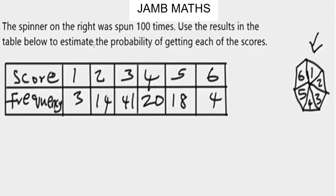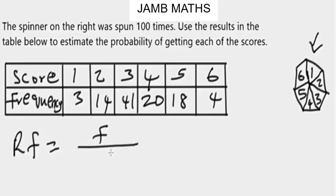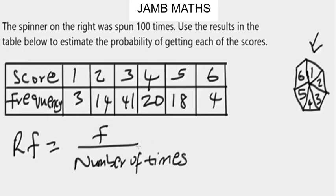You need to do an experiment over and over again and count how many times each outcome happens. That count is the frequency. You can then calculate the relative frequency using this formula: relative frequency equals frequency over the number of times you tried the experiment. You can use relative frequency as an estimate of probability.